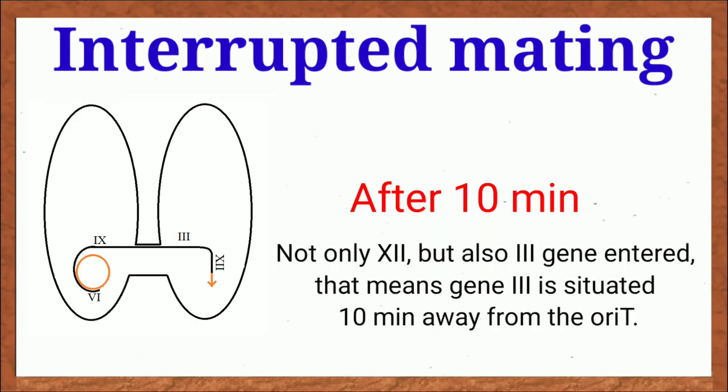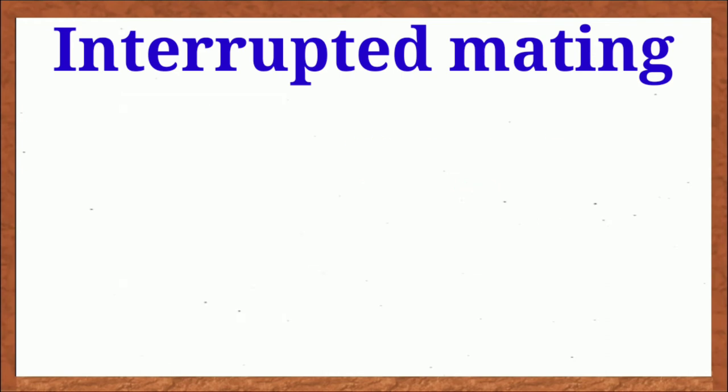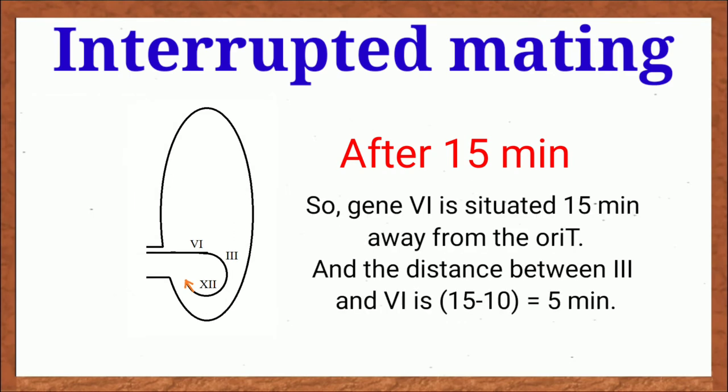At 10 minutes, gene 3 will enter. Then we can conclude that gene 12 is situated very close to oriT first, then gene 3 is present and half are there. The distance between 12 and 3 is 10 minus 5 or 5 minutes. At 15 minutes, gene 6 will enter.